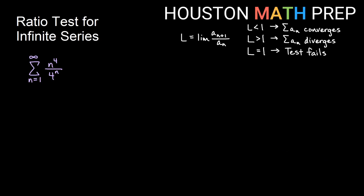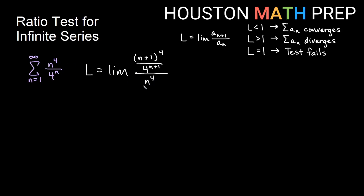Let's work through some examples. We have the sum from 1 to infinity of n^4 over 4^n. We look at the limit of the (n+1)th term over the nth term. L equals the limit of (n+1)^4 over 4^(n+1), divided by n^4 over 4^n. We multiply by the reciprocal, getting 4^n on top and n^4 on the bottom.